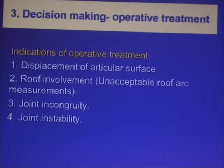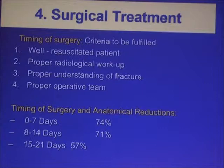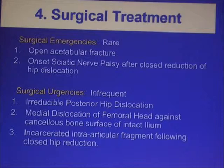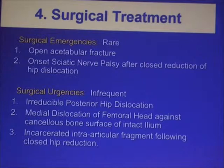Operative treatment is indicated for displacement of the articular surface in the roof, joint incongruity, and joint instability. What is the proper timing for surgery? We need a well-resuscitated patient, proper pre-operative radiological workup, proper understanding of the fracture, and a proper operative team. Don't delay surgery — delay compromises the quality of reduction. The best time is within five days after trauma. Surgical emergencies include open acetabular fracture, sciatic nerve palsy after closed reduction of hip dislocation, irreducible posterior hip dislocation with wall fracture, medial dislocation of the femoral head, and intra-articular fragments inside the hip joint.